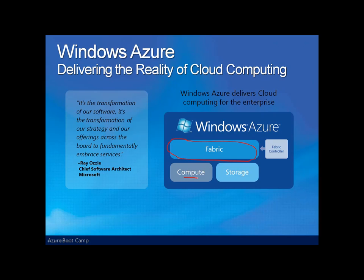Computation will be in the form of two different types of applications or roles that you create — either web or worker roles. These will be described momentarily. Storage of data is in the form of blobs, tables, and queues. More on these also in a bit.